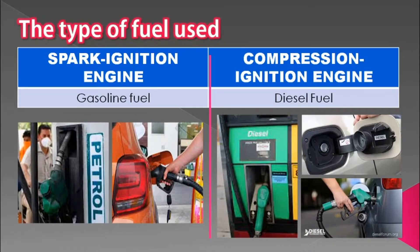The first difference between the spark ignition engine and the compression ignition engine is the type of fuel used. They use different fuels — the spark ignition engine uses gasoline fuel, while the compression ignition engine uses diesel fuel. For gasoline engines, a carburetor is commonly used, while diesel engines use an injection pump.